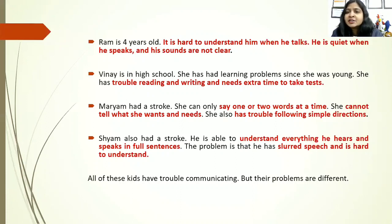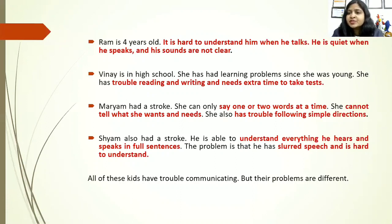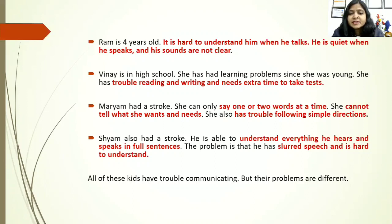Ram is four years. It is hard to understand him when he talks, his sounds are not clear, and he is quiet when he speaks. Vinay is in high school. She has had problems since she was young and has trouble reading and writing and needs extra time to take tests. Maryam had a stroke. She can only say one or two words at a time and cannot tell what she wants and needs, and has trouble following simple directions. Shyam also had a stroke. He is able to understand everything, hears and speaks in full sentences, but has slurred speech and is hard to understand.